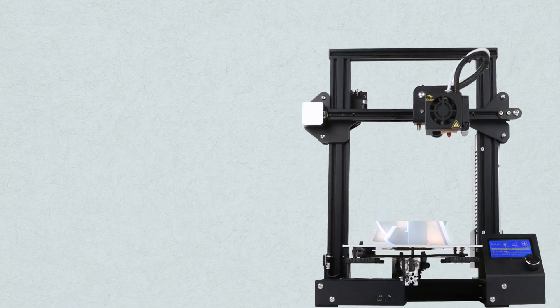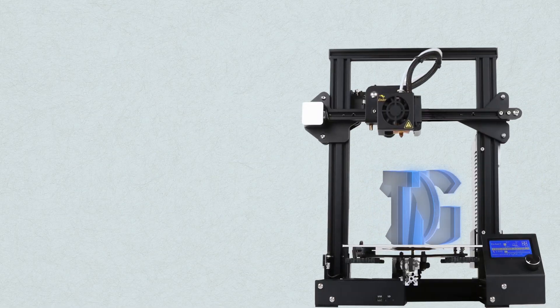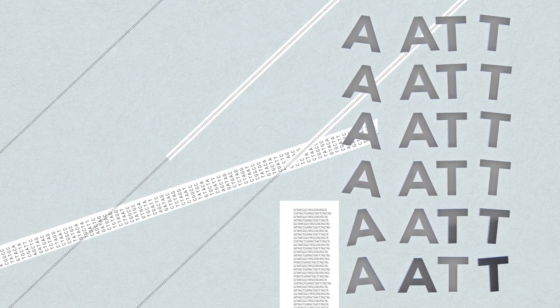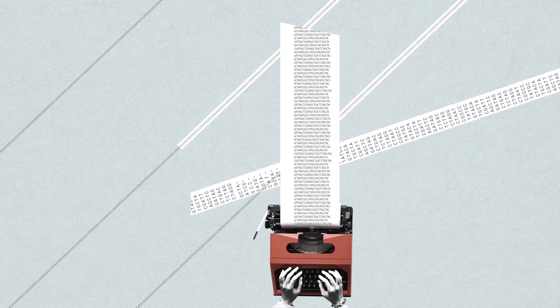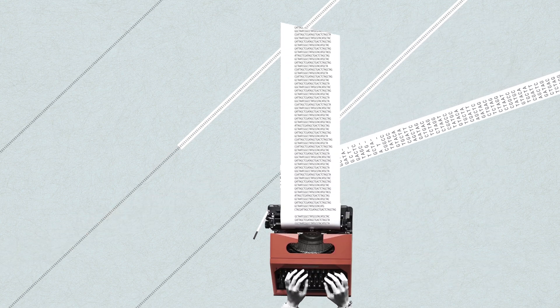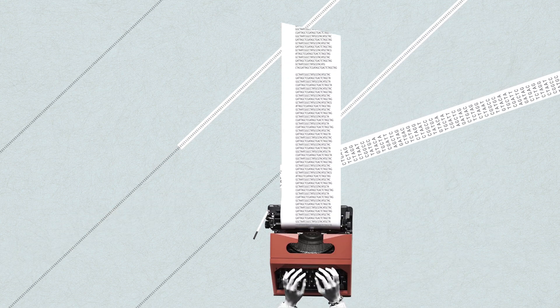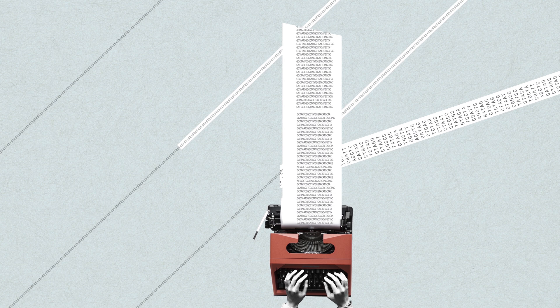DNA is the basic code of life. It is in every single living organism on earth. The process of recoding DNA is genetic engineering. With gene editing, we are able to modify genes, whether it is to correct defects that cause diseases like cancer.